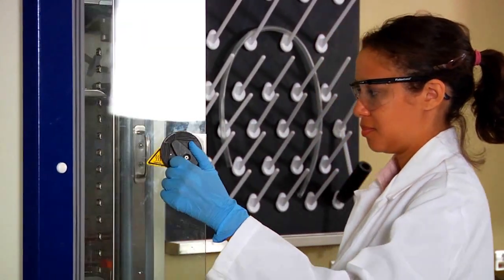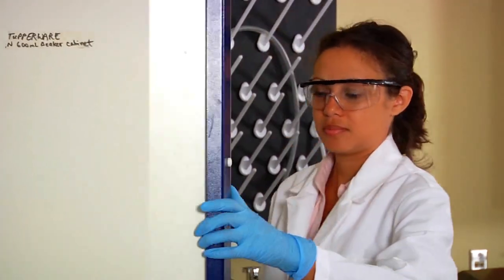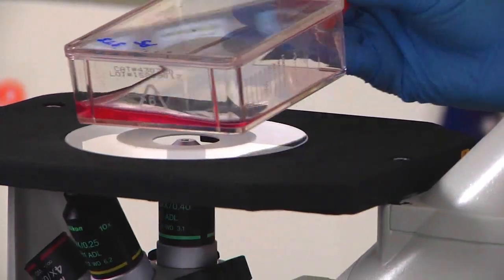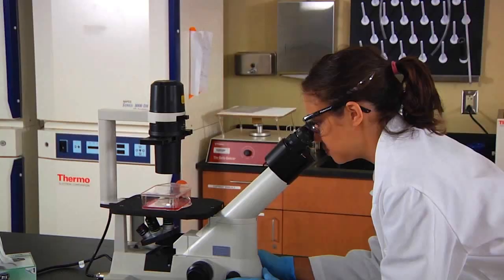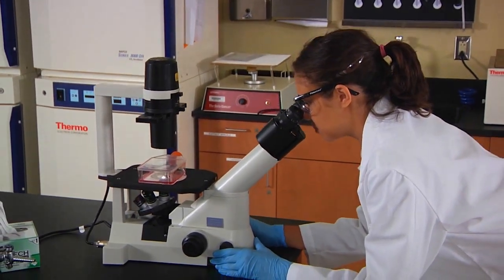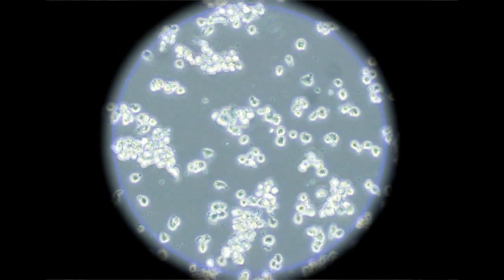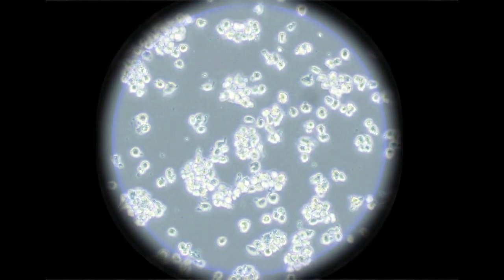Remove the flask from the incubator and use an inverted microscope to check for dispersion. The cells in our culture are properly dispersed. As you can see, the cells are detached and floating.